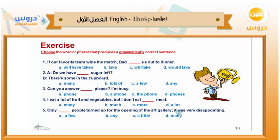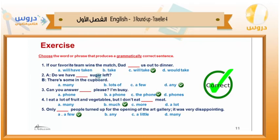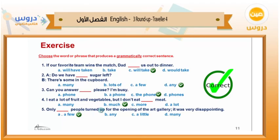The answers: if type 1 — if the team wins, 'dad will take us to dinner.' Number two: 'Do we have any sugar left?' — we use 'any' in questions. Number three: 'Can you answer the phone please?' Number four: 'I don't eat much meat' — it's uncountable. Number five: 'Only a few people turned up for the opening of the art gallery; it was very disappointing.'